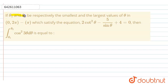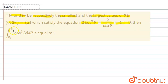If θ₁ and θ₂ are respectively the smallest and the largest values of θ in the interval (0, 2π) minus the singleton {π}, which satisfies the equation 2cot²θ − 5/sinθ + 4 = 0, then we have to find the value of the integration from θ₁ to θ₂ of cos²(3θ) dθ.